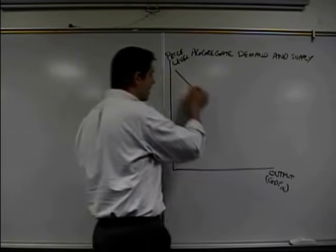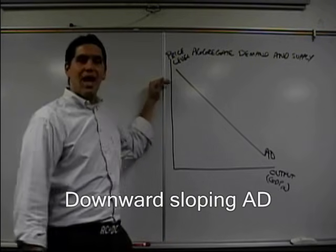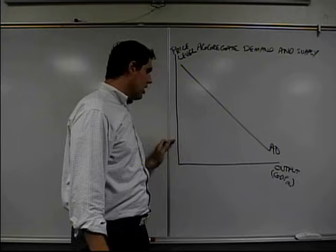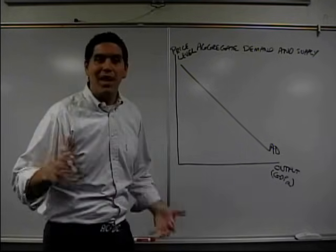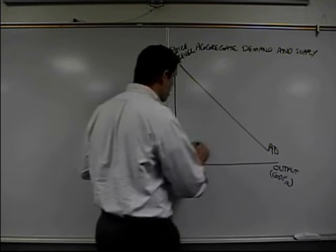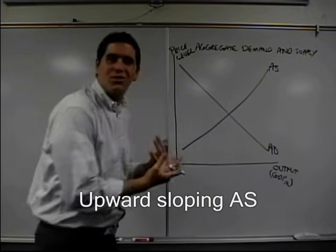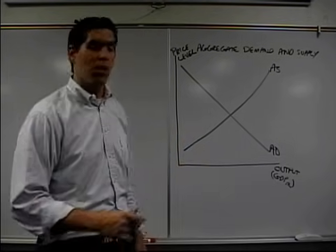So you already know down sloping demand curve look like this. This is aggregate demand. When the price level is high, when there's a lot of inflation, people aren't going to buy very much. When the price is low, people are going to buy a whole lot more. Done. Same thing with supply. You know what supply curves look like? They're upward sloping. This is aggregate supply. When the price level is low, producers aren't going to produce very much. Price level goes up, I'm going to produce more, make more profit.